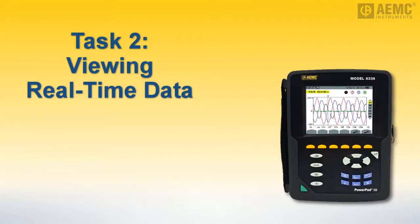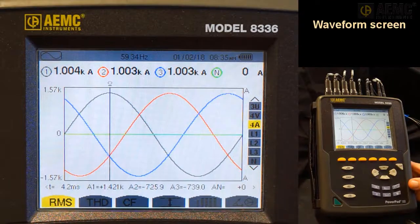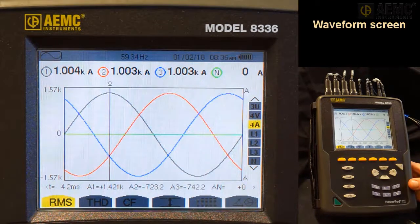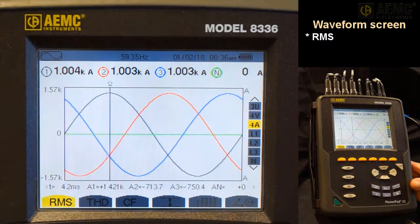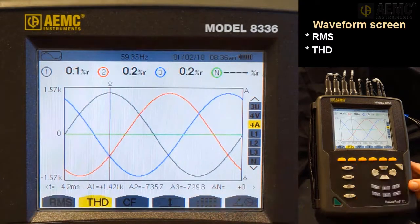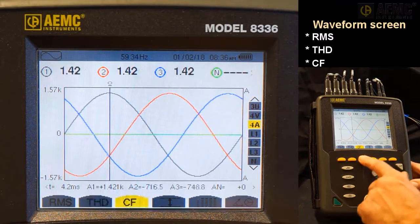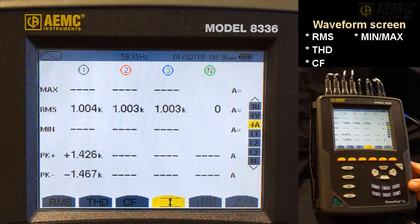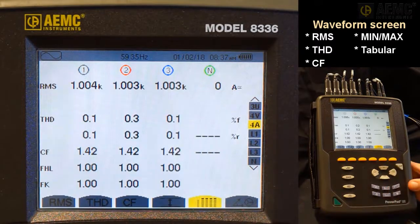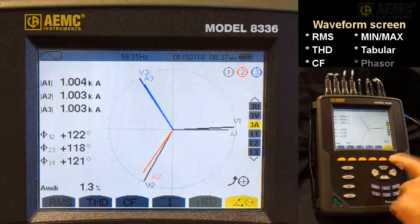With the Model 8336 configured and connected to a hookup, or in our case, a hookup simulation, we can now view measurement data in real-time. For instance, the default display screen that appears when you first power on the Model 8336 is the waveform screen. This screen includes its own set of function button icons for displaying true RMS values, total harmonic distortion calculations, crest factor values, minimum, maximum, RMS, and peak values, a variety of measurements in tabular format, and a real-time phasor diagram.